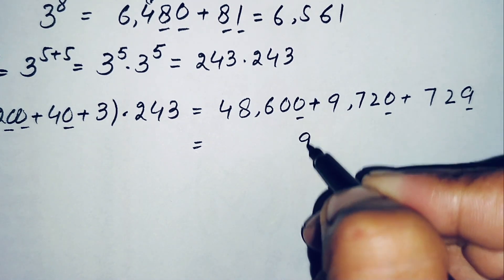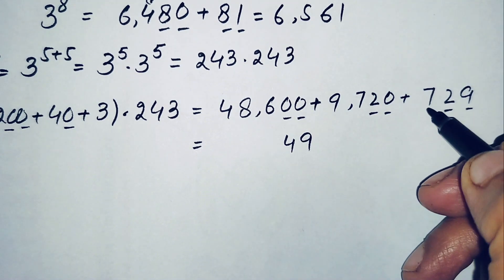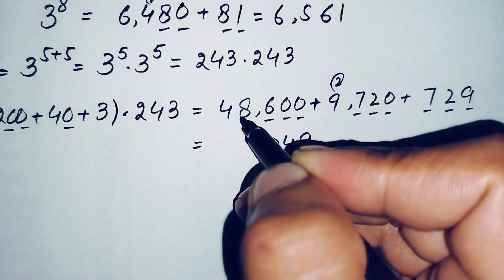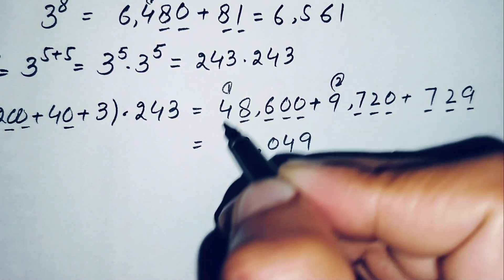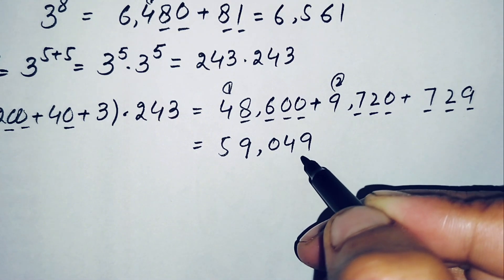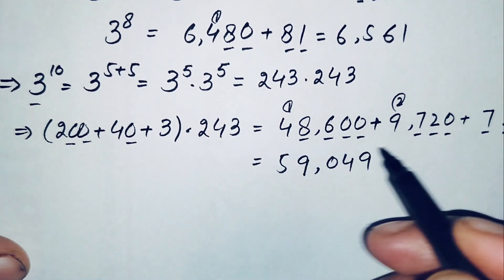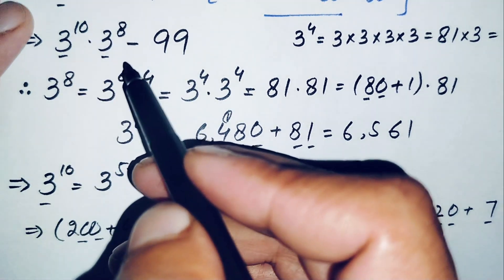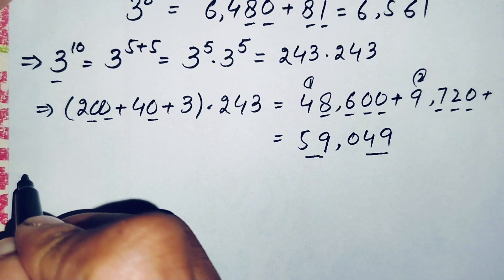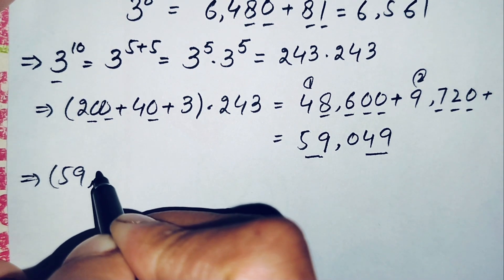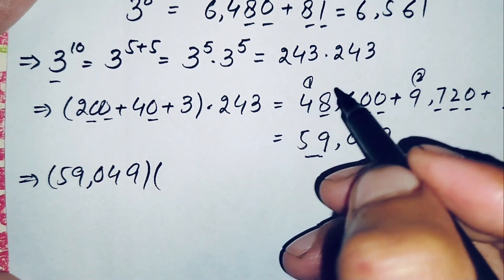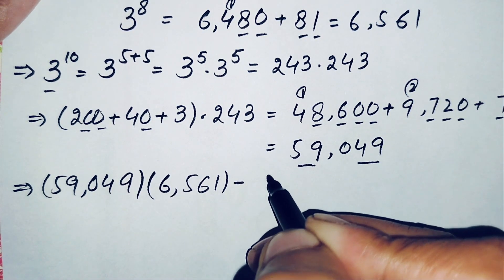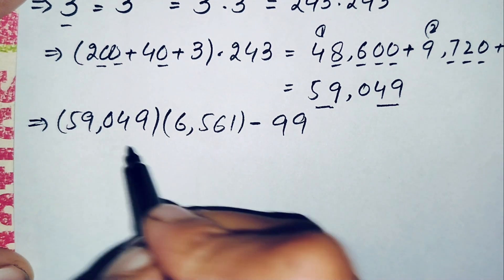Adding 48600 plus 9720 plus 729: ones place 9, tens place 4+2+2 equals... working through the addition carefully gives 59049. So the value of 3 to the power 10 is 59049. Now we replace 3 to the power 10 and 3 to the power 8 with their values: 59049 times 6561, minus 99.